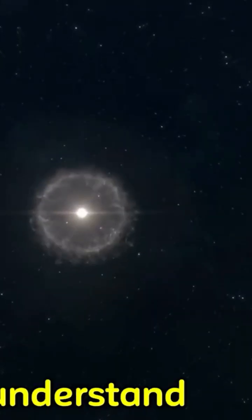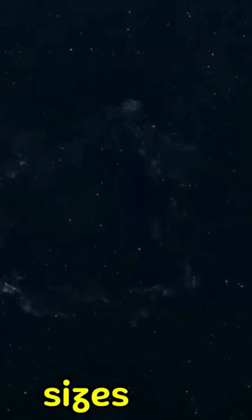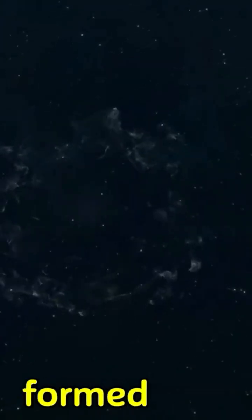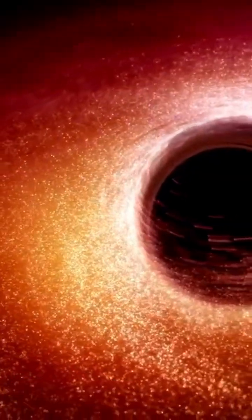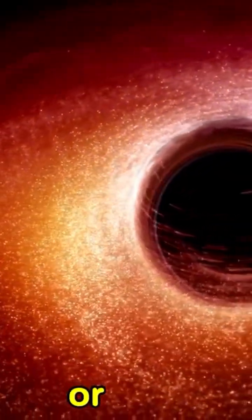First, understand that black holes come in different sizes. Stellar black holes are formed from collapsing stars. Supermassive black holes lurk at galaxy centers. Their mass can be millions or even billions of times greater than our sun.